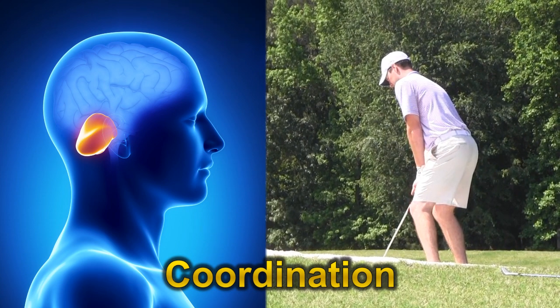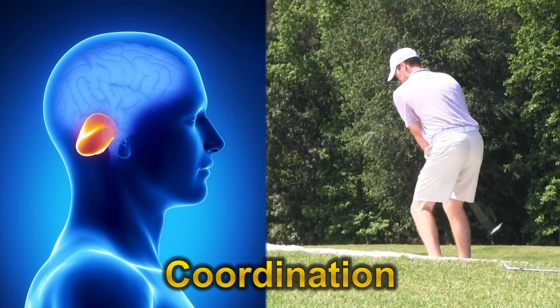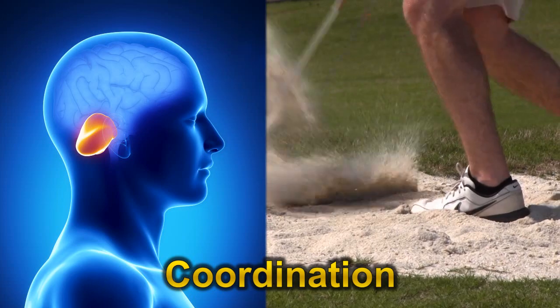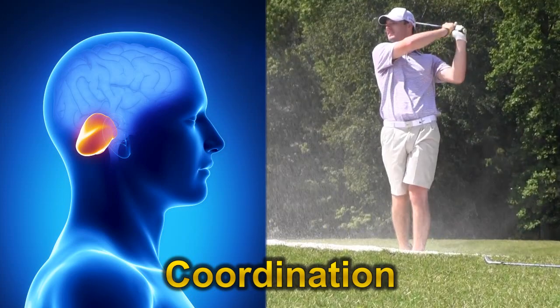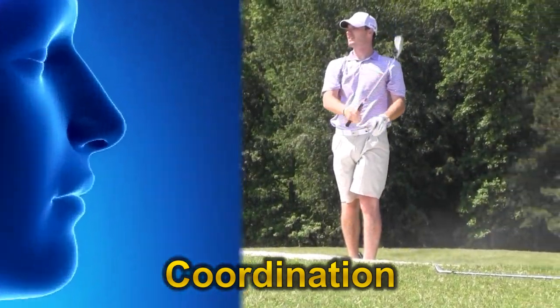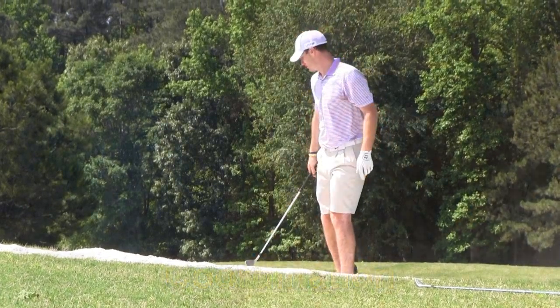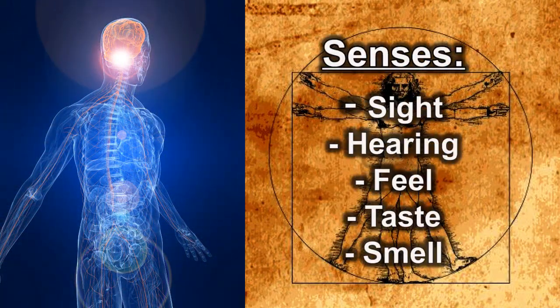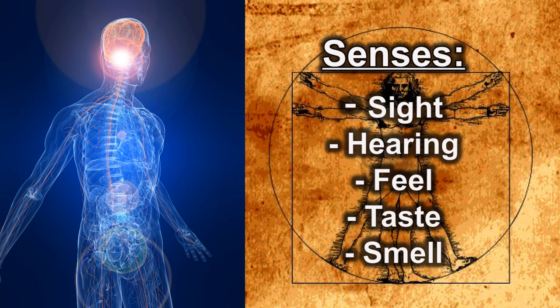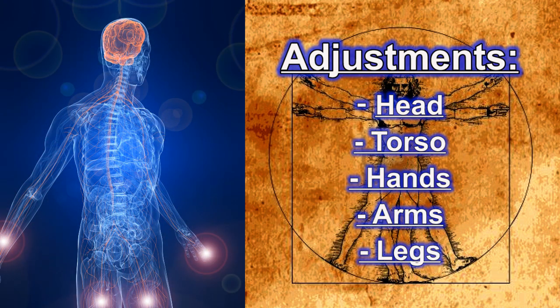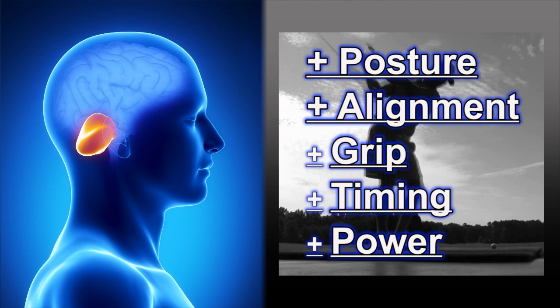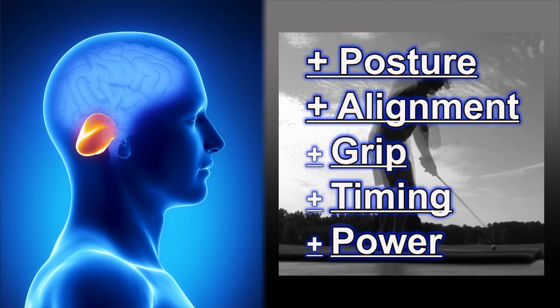You see, working in real time on unperceivable levels, the cerebellum continually tracks the current location of every body part and directs it where it needs to go to complete a selected task. It receives instant updates from sensory neurons and sends instant corrections to the outer extremities through motor neurons.